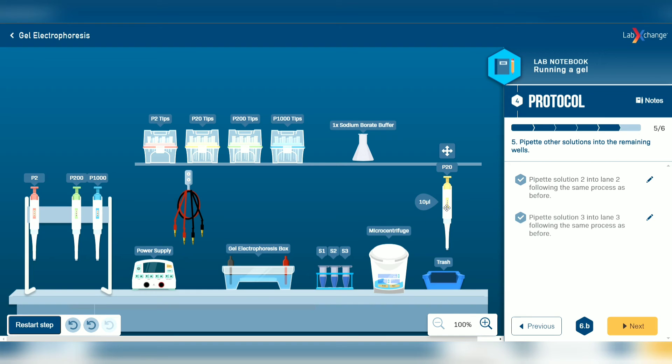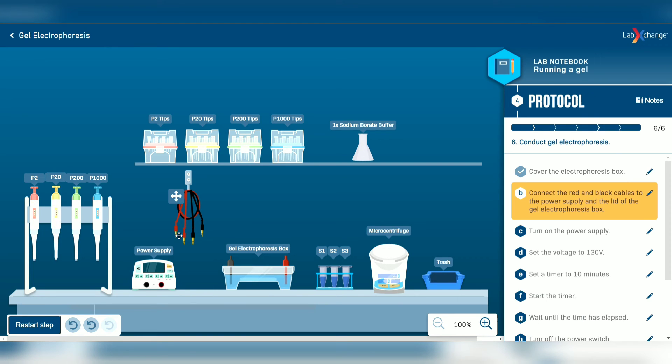Close the electrophoresis box and put the P20 micropipette back to the rack. Continue the experiment by connecting the red and black cables to the power supply and the lid of the gel.